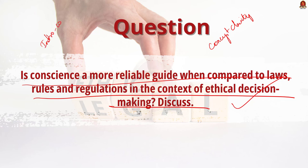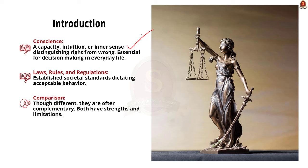In the main body, write a discussion on the advantages of using conscience as a reliable guide to take decisions, and also cover the limitations of conscience. For the introduction, you can write: conscience is the capacity, intuition, or inner sense that helps distinguish right from wrong. Laws, rules, and regulations are established standards of society that dictate what is acceptable. Though both appear different, they are often complementary to each other. Comparing them for ethical decision making is complex as both have strengths and limitations.